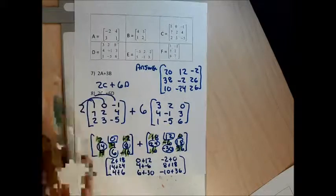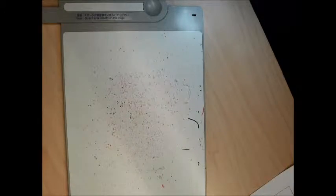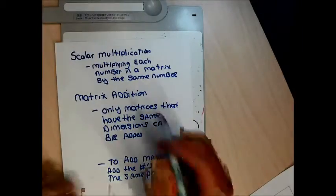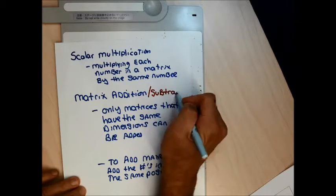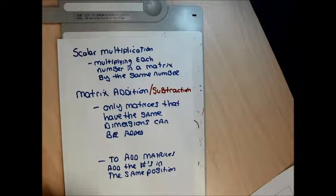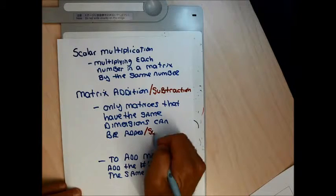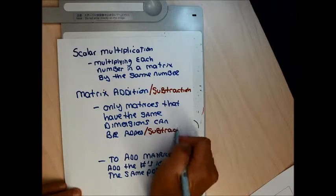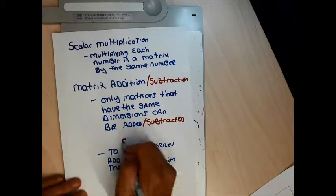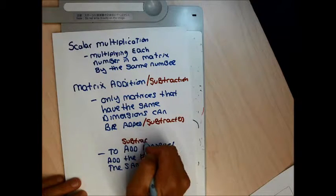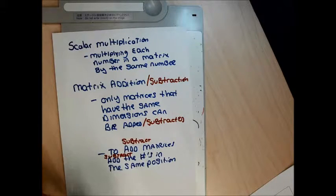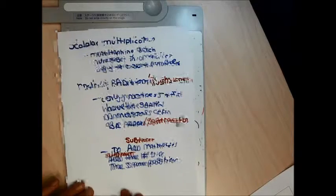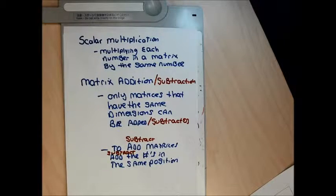The next problems have a combination of matrix subtraction with scalar multiplication. Matrix subtraction is basically identical to matrix addition. To do matrix subtraction, only matrices that have the same dimensions can be subtracted, and you subtract the numbers in the same position.